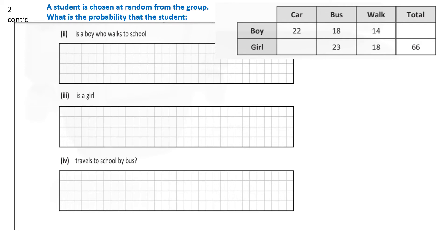We're going to continue this question. I just have the table repeated here again for ease of answering the following questions. So a student is chosen at random from the group. What is the probability the student is a boy who walks to school? So we know that there are 120 students in total. So there are 14 boys who walk. So the probability of a boy who walks to school is equal to 14 out of 120. Now, that could be simplified to 7 over 60.